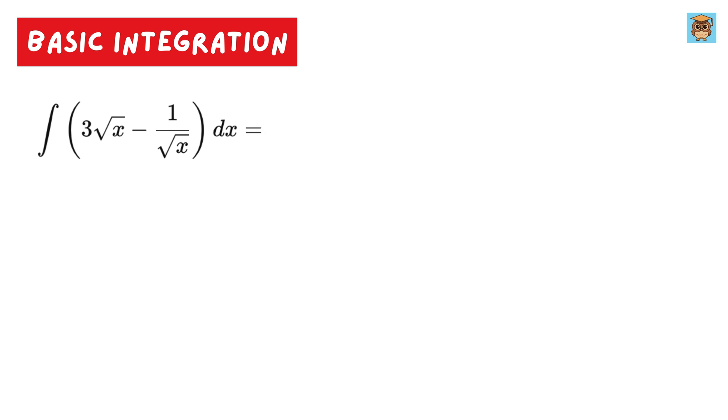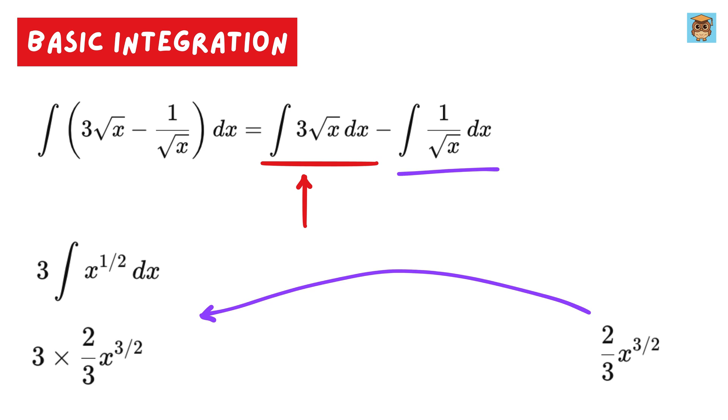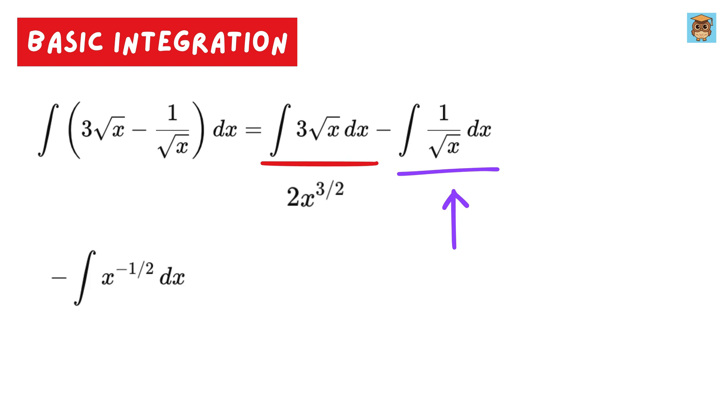Now solve for this. Step 1 is to break them into separate terms. Now consider this part. Take 3 outside, and then write this square root as x raised to 1 over 2. So using this formula, we get x raised to half plus 1 over half plus 1, or x to the 3 over 2 divided by 3 over 2, or 2 over 3 times x to the 3 over 2. And when multiplied with this 3, we get 2 times x to the 3 over 2. And for this part, we get minus 1 times integral of x to the minus half, or x to the minus half plus 1 over minus half plus 1, or 2 times square root of x. So the final answer is 2 times x to the 3 over 2 minus 2 times the square root of x. Don't forget to add c to it.